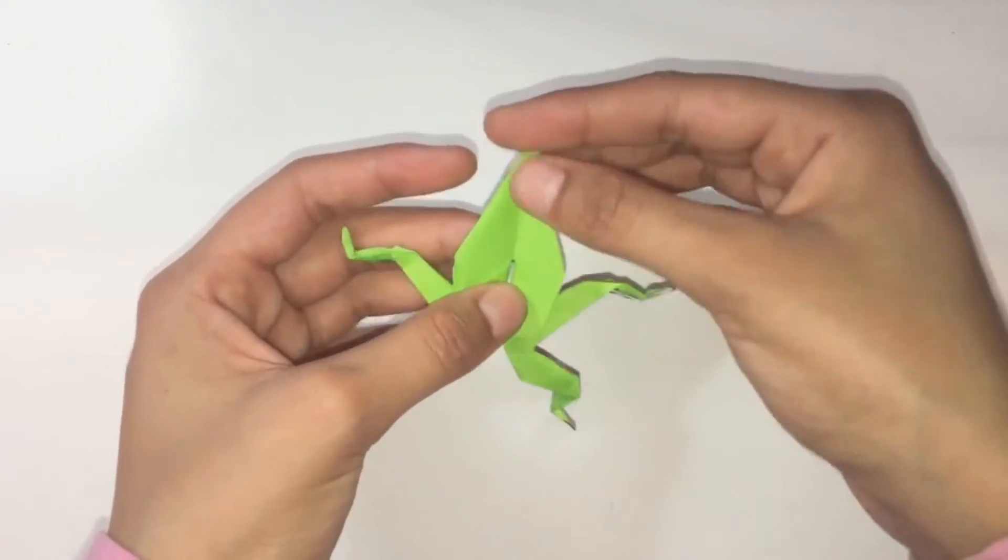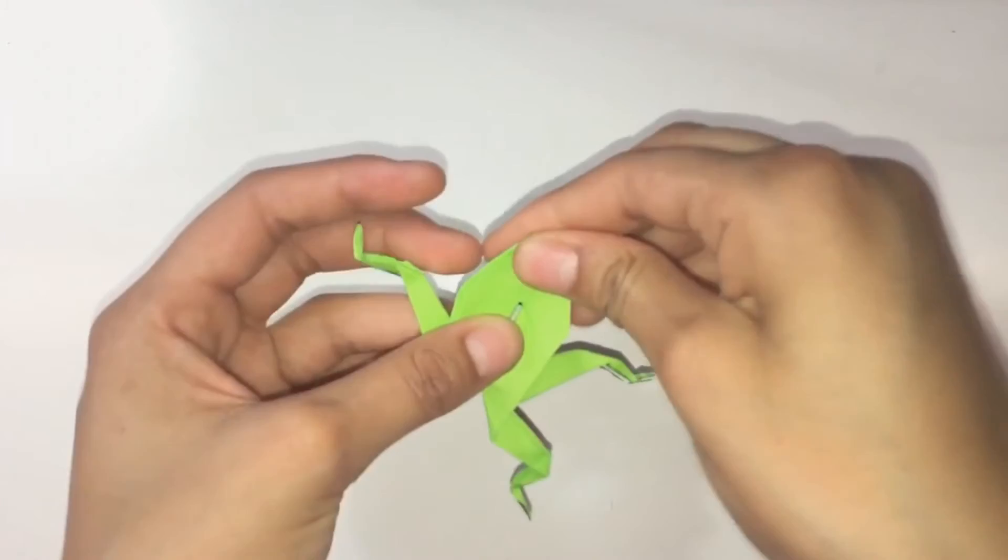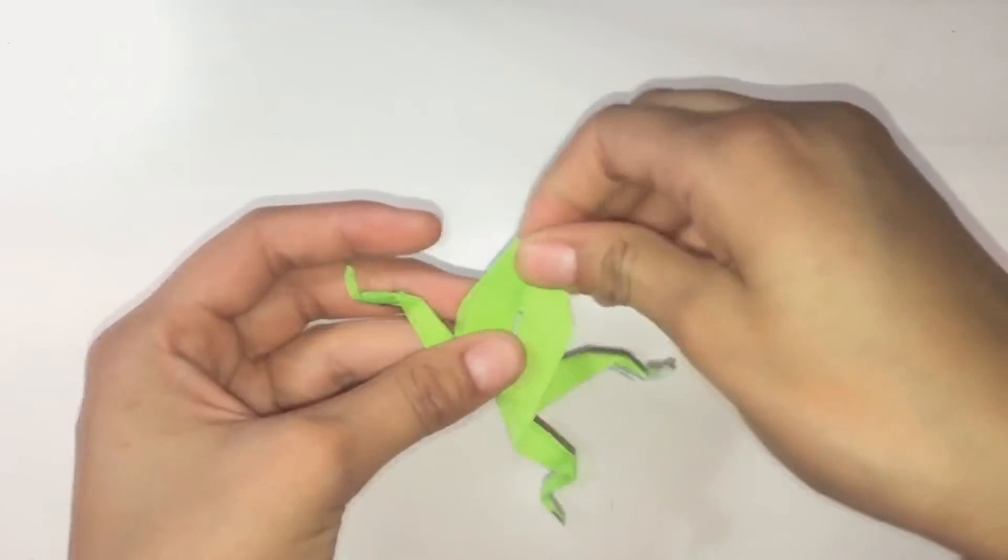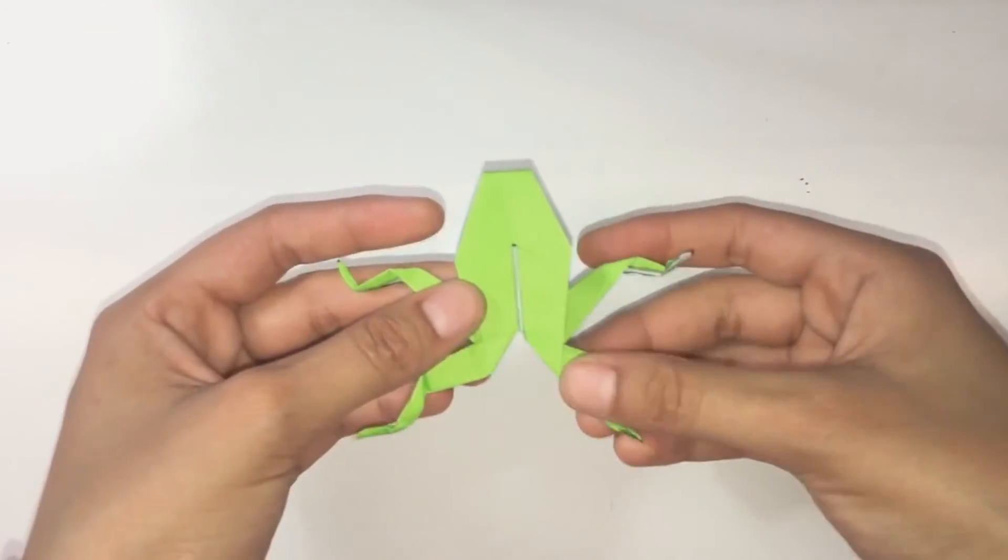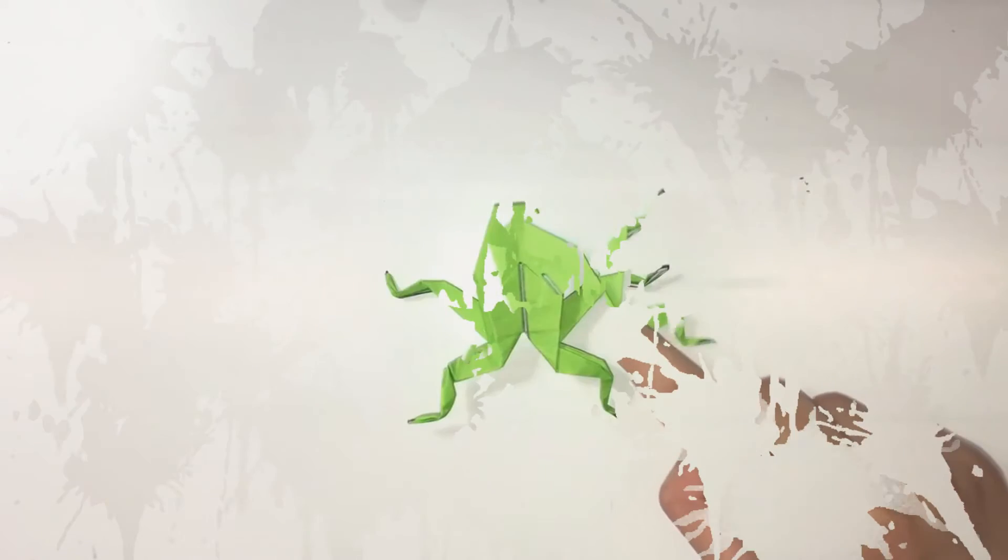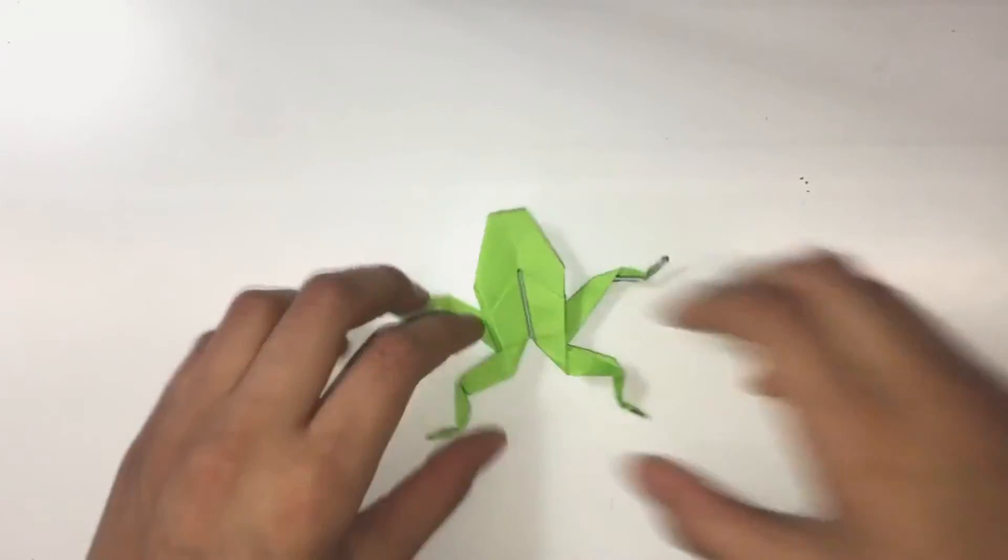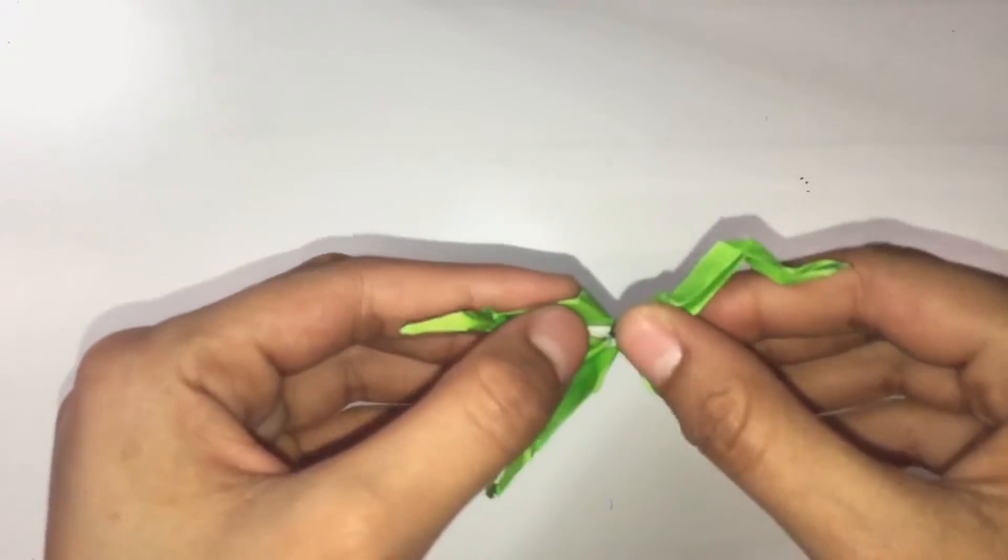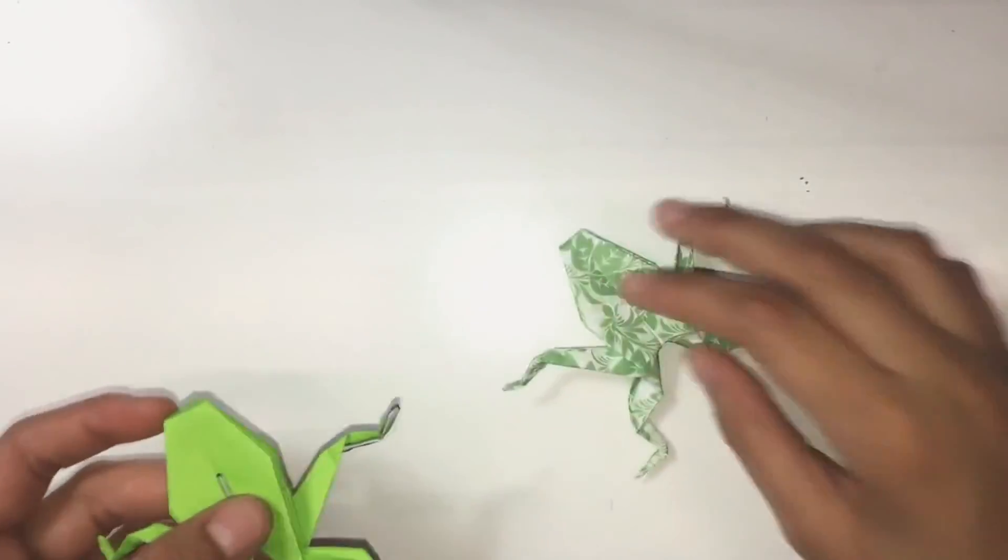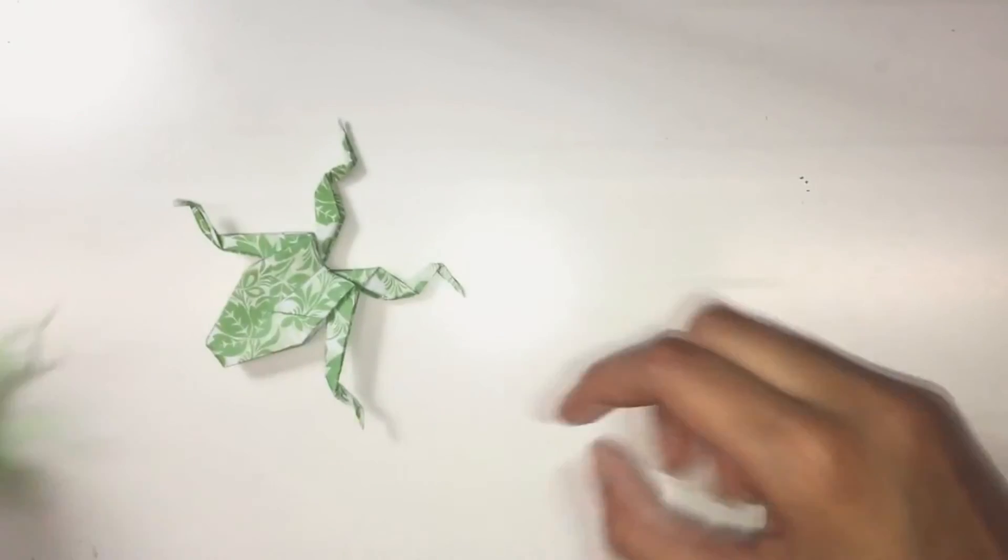Then you'll fold the top edge of this frog over so his head doesn't look too pointy. And you've finished your frog. If you wanted your frog to jump better then you can actually inflate it through the hole back here. I inflated this one a little bit but it kind of lost the air. But it bounces better than the flatter ones.